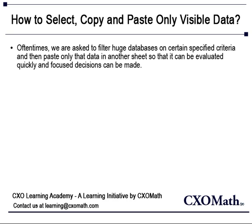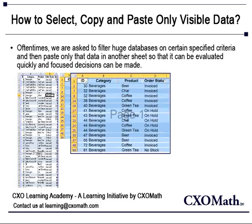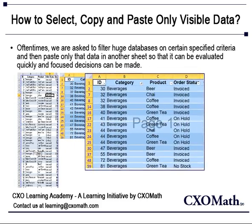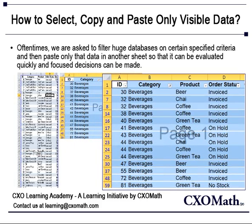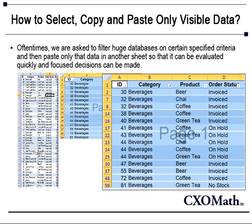However, when we try to copy the filtered data, the entire dataset, including hidden cells, ends up being selected and pasted. Going back and removing individual records can be very time-consuming.